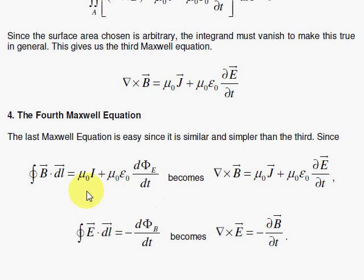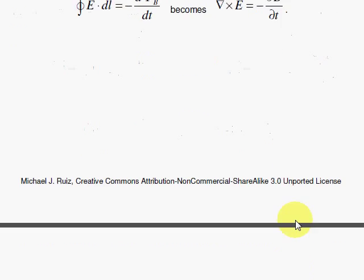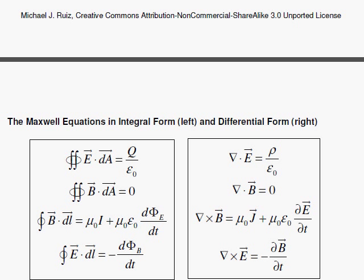The fourth equation is easy because it's another loop integral. We don't have the current term; we just have a constant replaced by minus one and E becomes B. There is no analogous current term here. The constants get replaced by minus one, and since we have magnetic flux instead of electric flux, we take the derivative with respect to the magnetic field B. We are finished — we have all four Maxwell equations in differential form, and in the next section we'll gain more insight into what they mean.